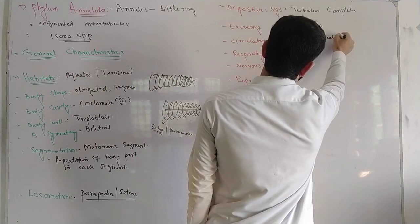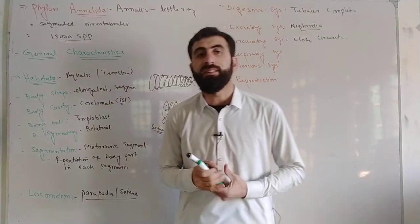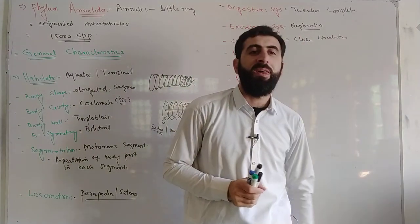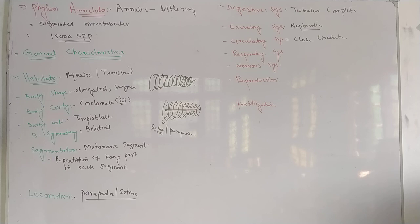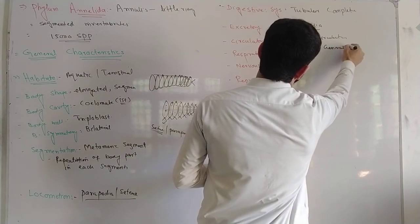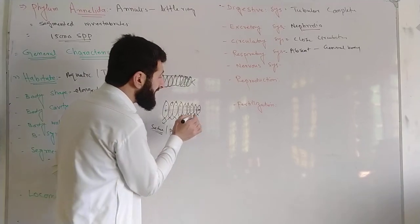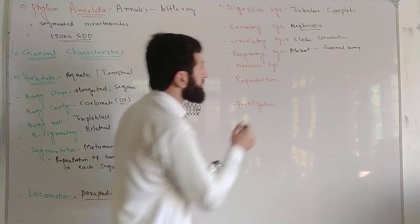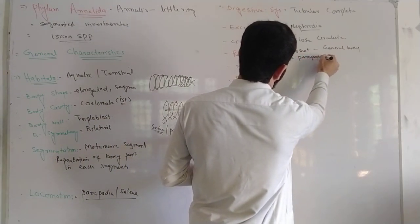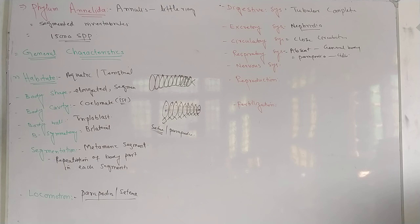Closed circulatory system. These are the best invertebrates which develop closed circulatory system. Then we come to the respiratory system. Respiratory system is absent. So general body surface is used for exchange of gases. For example, earthworm. Some aquatic organisms contain gills behind parapodia. Some aquatic organisms have gills behind parapodia, and these gills are the organs for respiration in such type of organisms.